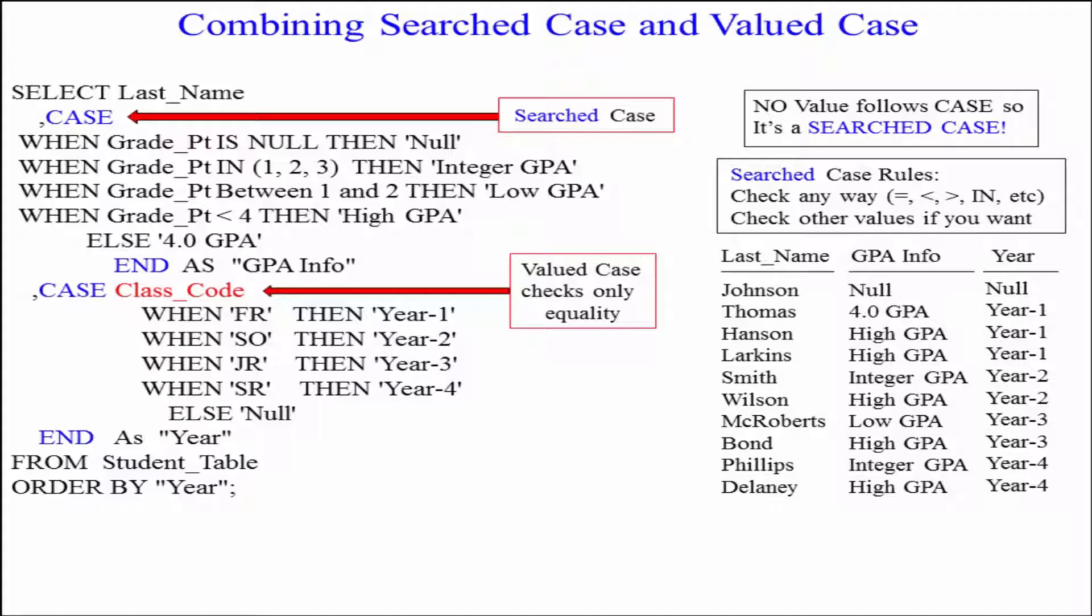Take a look at this monstrosity. How many columns are coming back on my report? Just three. I'm going to put the last name as the first column. Then I want a case.